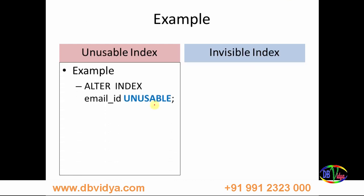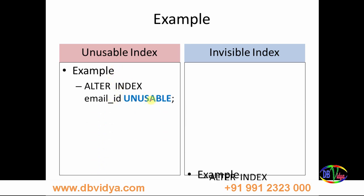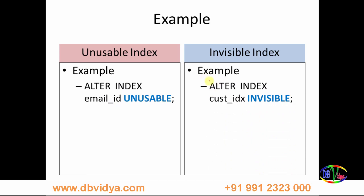Let us see the syntax to make an index unusable. You can say: ALTER INDEX index_name UNUSABLE. Similarly for an invisible index: ALTER INDEX index_name INVISIBLE. So for an unusable index you use the UNUSABLE keyword, and for an invisible index you use the INVISIBLE keyword to convert a normal index to either unusable or invisible.